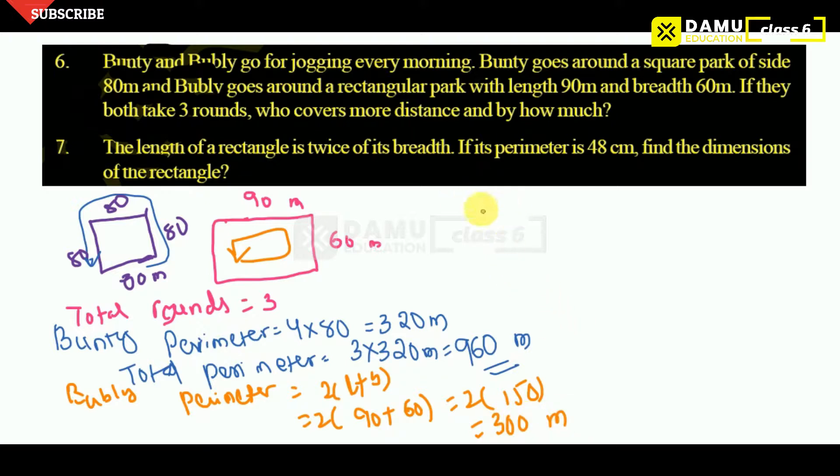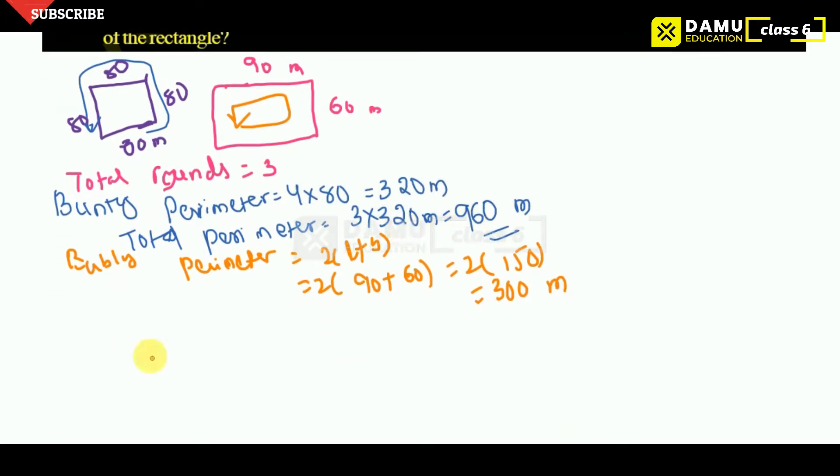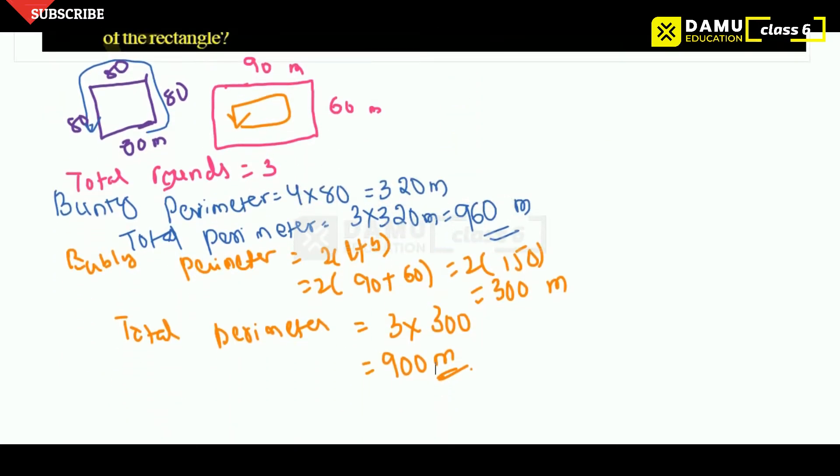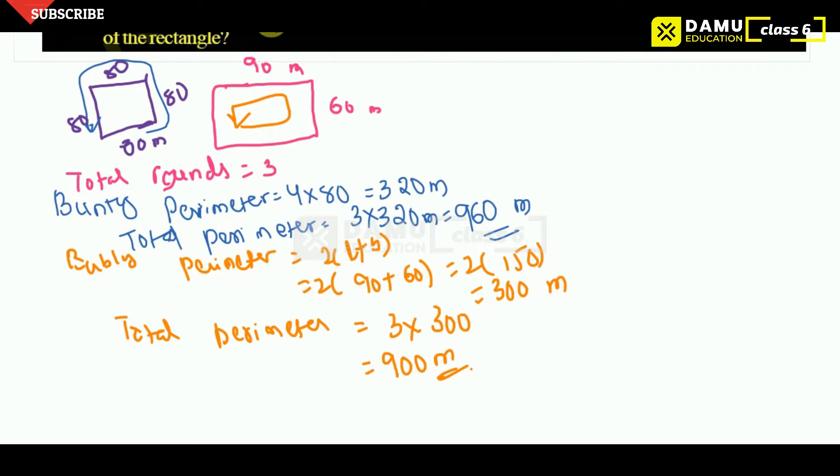Then what we will get here is, let's take total perimeter by Bubbly. Total perimeter, how many times did he get rounded? 3 into 300. Then 900 meters. So who rounded more times? Bubbly or the distance, more distance covered by Bunty or Bubbly. So Bubbly rounded by 3. Bunty rounded 3, 960. Bubbly 900 only.